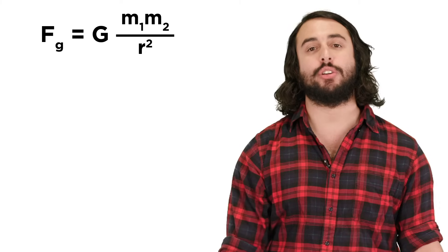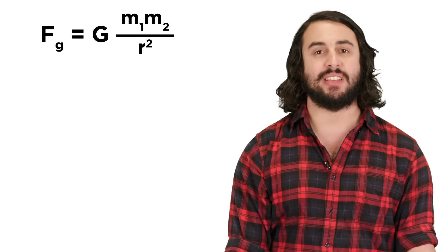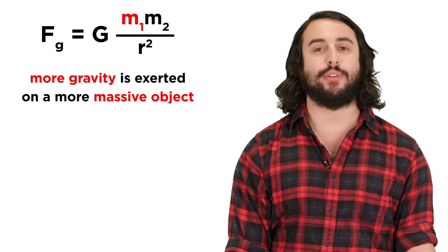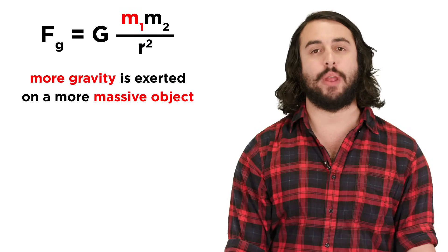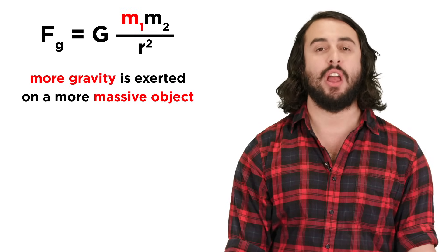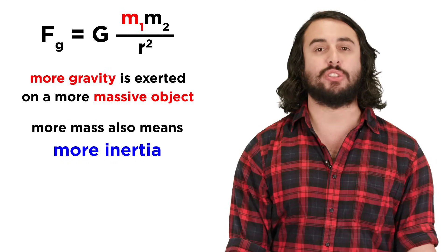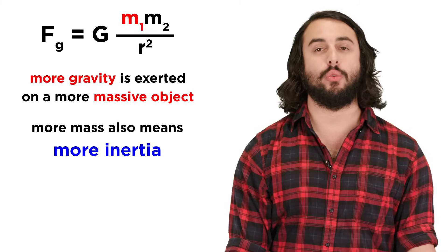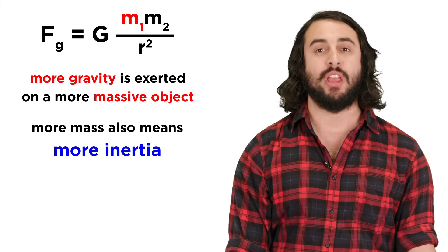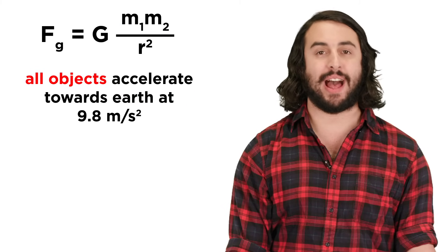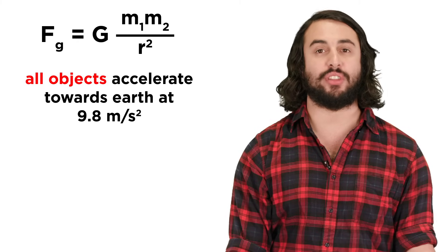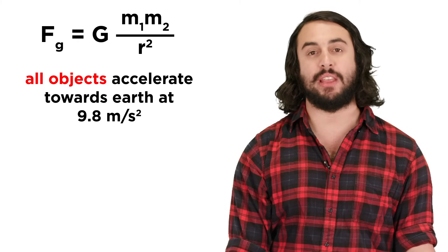Although counterintuitive to some, we can rationalize this if we understand that while the force of gravity is able to impart greater acceleration on a more massive object, the more massive object also has greater inertia, or resistance to being accelerated, so the end result is that all objects accelerate towards earth in the same way, at 9.8 meters per second squared.